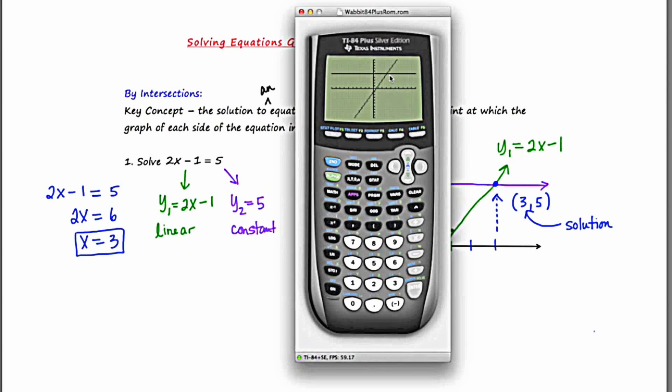Now the calculator can find this point of intersection for us. So we're going to press second, then trace, and a menu is going to show up. And we're going to pick option 5 which says intersect. Now there's going to be three prompts at the bottom of the screen. It's going to say first curve, second curve, and then guess. And what you essentially want to do is have the cursor blinking by the point of intersection for each of these prompts.